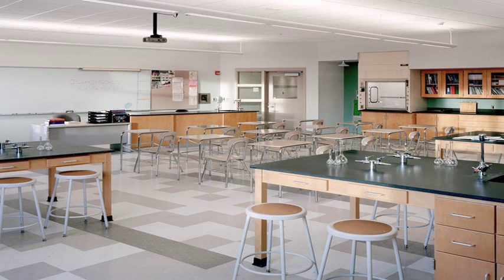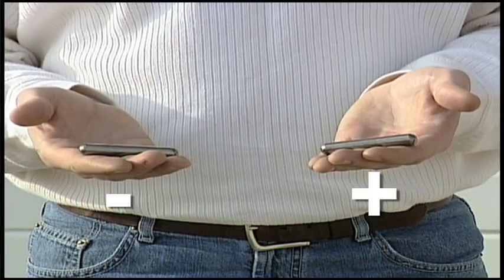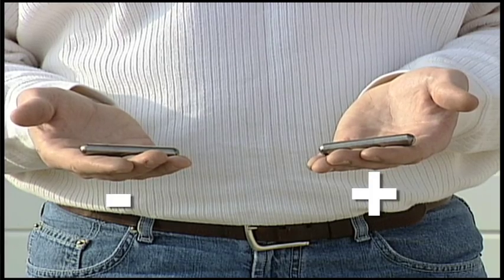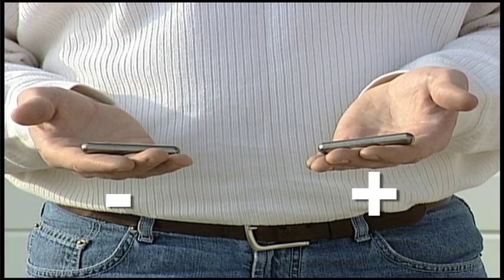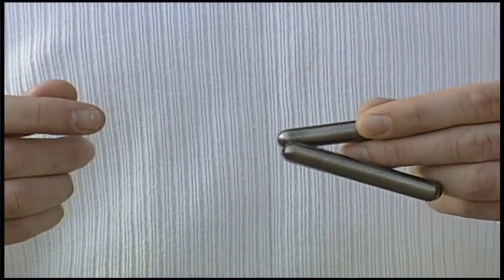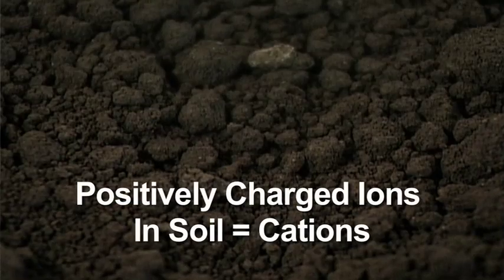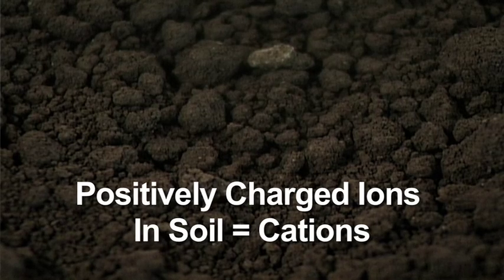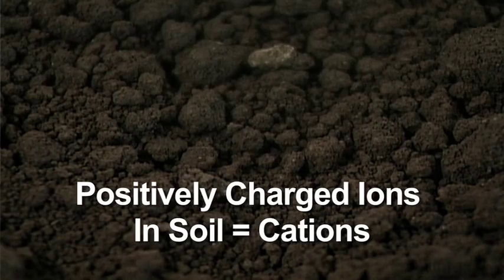Let's take you back to that freshman chemistry class. It's real simple. When you've got two magnets and one has a negative charge, like your soil, what's it going to attract? Not other negatively charged stuff — it's going to attract positively charged things. So when we talk about ions in the soil, the positively charged ones are called cations. That's the first word in cation exchange capacity.